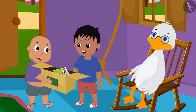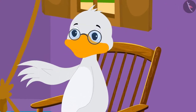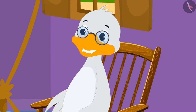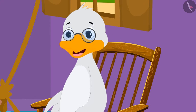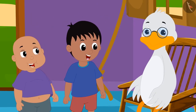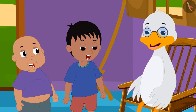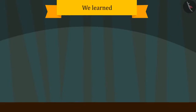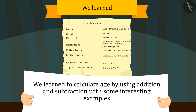Raju and Bablu enjoyed seeing the old pictures of uncle. Uncle told them that if they had some more time, he could tell them some stories of his childhood. Kids, in this video we learned to calculate age by using addition and subtraction with some interesting examples. In the next video, we will see some common mistakes related to it.